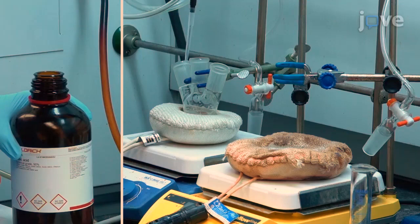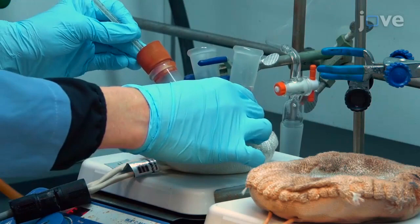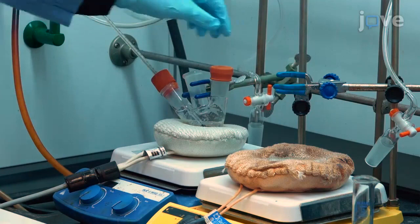Place a thermometer into one of the necks of the round-bottom flask via a rubber septum. Next, place a rubber septum into one of the remaining necks and attach the third neck to the nitrogen gas line via a schlenk line.